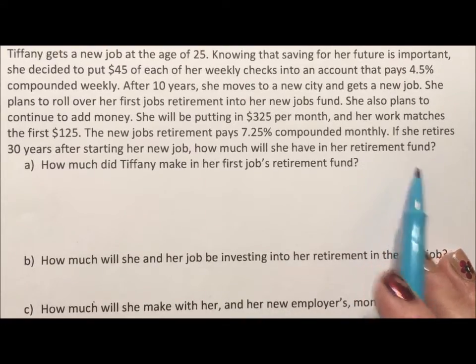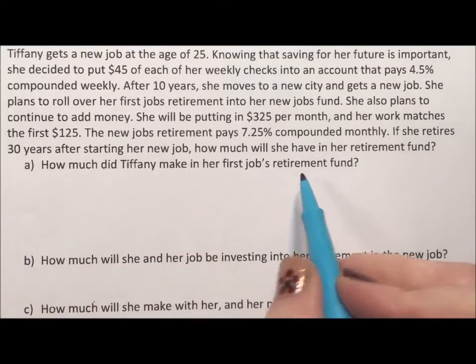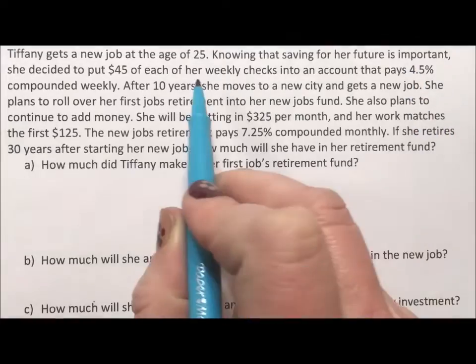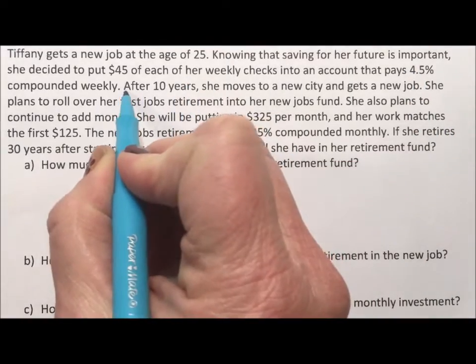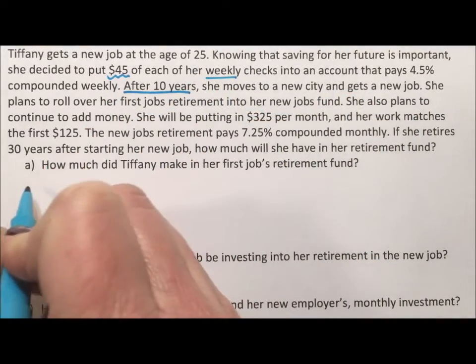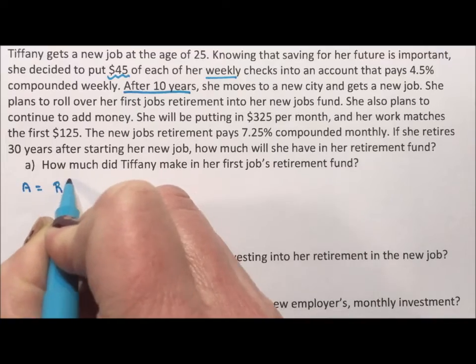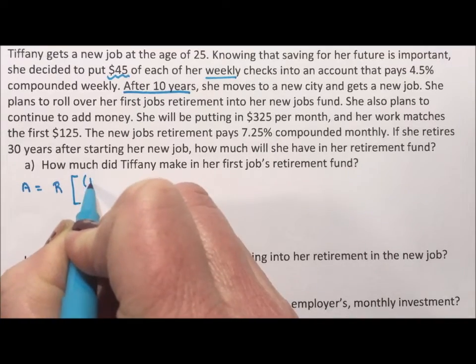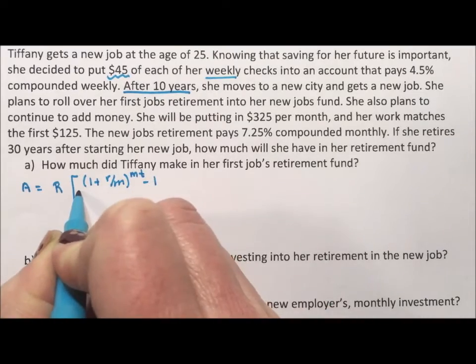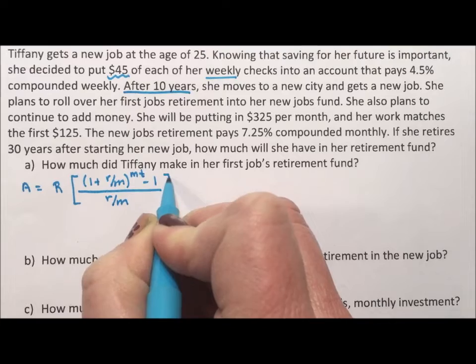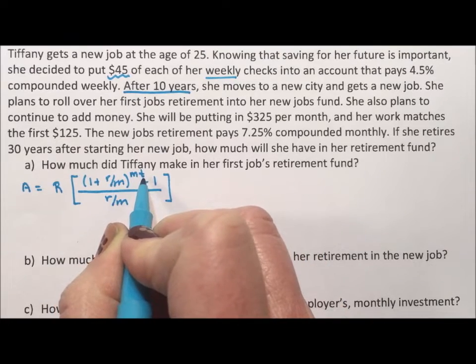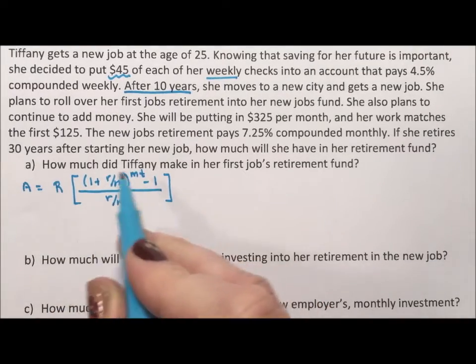We'll start off with her first job. She got it when she was 25 and she had it for 10 years. She put $45 in weekly, so this is an annuity. My annuity formula is A equals R times 1 plus r over m to the mt minus 1, all divided by r over m. There is a way where you have r over m replaced by the variable i and mt replaced by the variable n. I sometimes use that, I think this is a nice one and done way to do it.